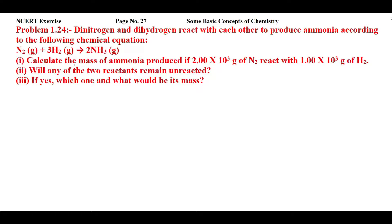In this question, the reaction is N₂ + 3H₂ → 2NH₃. The first question asks how much ammonia is produced when 2,000 g of nitrogen reacts with 1,000 g of hydrogen. The second asks if any reactant remains unreacted — that means identifying the excess reagent — and the third asks which one it is and to calculate its mass.